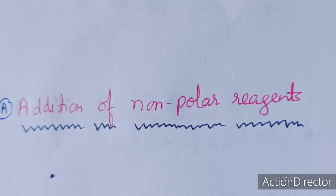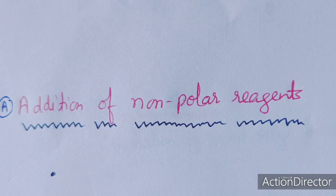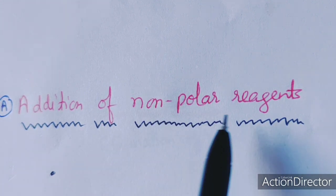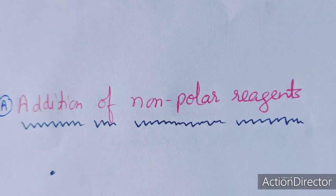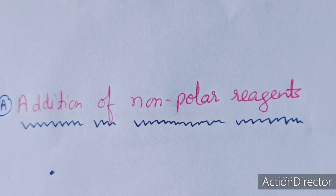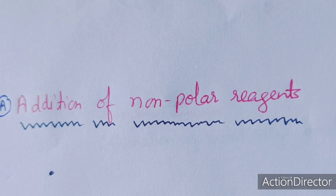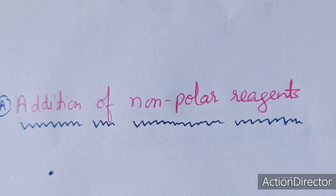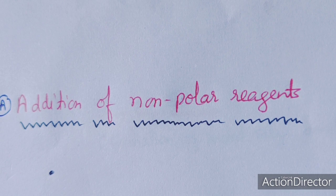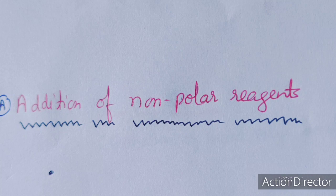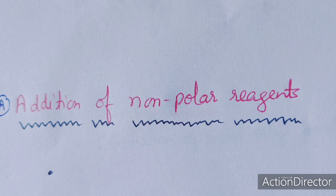Dear students, in this lecture I will discuss about the addition of non-polar reagents. We have already discussed about non-polar reagents of class A, like H2, addition of O2, addition of multiple bonded compounds, addition of SiH bond and CC bond. These are the kinds of non-polar reagents, and we will discuss how these non-polar reagents can oxidatively add to the metal center, including their mechanism.